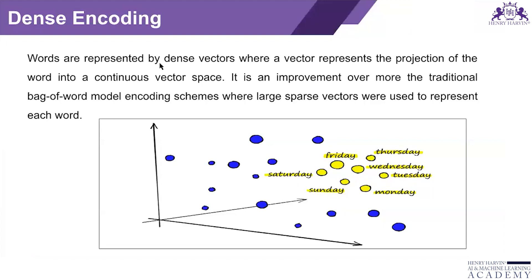Words are represented by dense vectors where a vector represents the projection of the word into a continuous vector space. Continuous vector space means the data is continuously coming into the data space and will be fed to the model, continuously fetching and processing. Which words are storing at what place and how it represents in this projection. It is an improvement over the traditional bag-of-words model encoding.